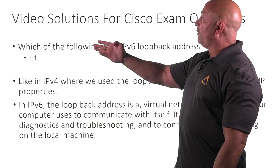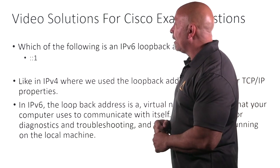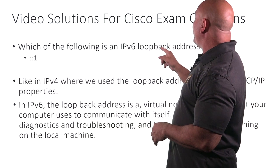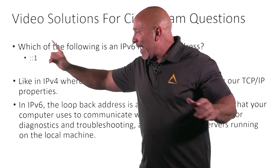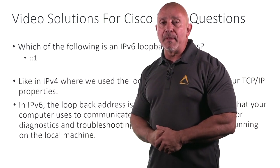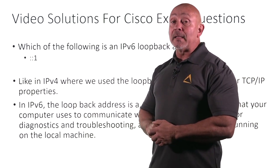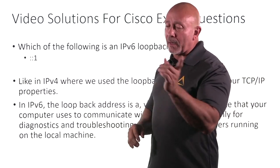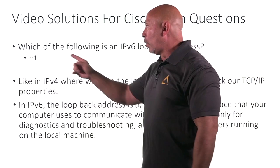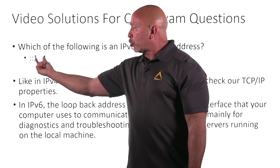Welcome back — video solutions for Cisco exam questions from Alpha Prep. Loopback: which of the following is an IPv6 loopback address? There it is: colon-colon one (::1). The prefix length would be /128 — not CIDR notation, but the prefix length is 128.